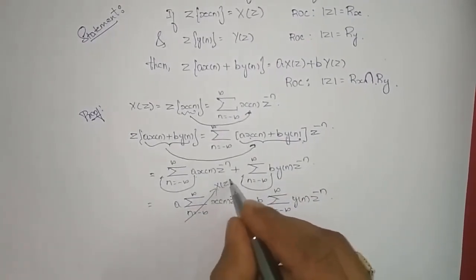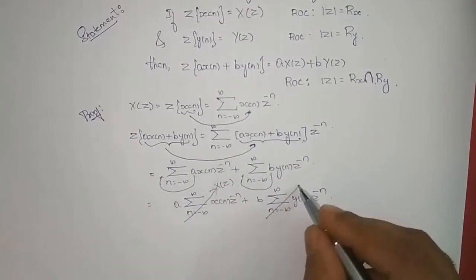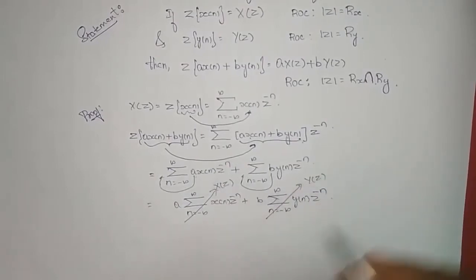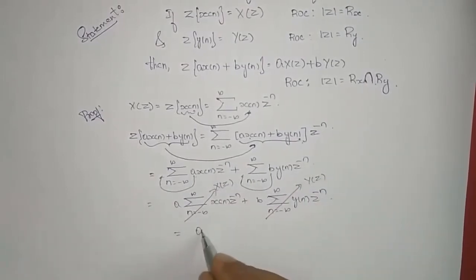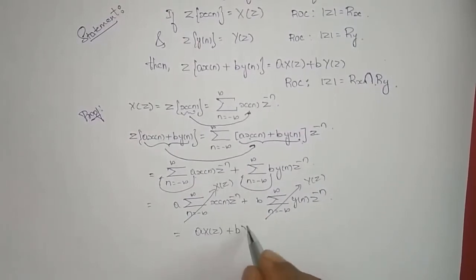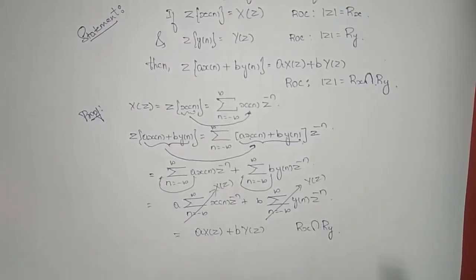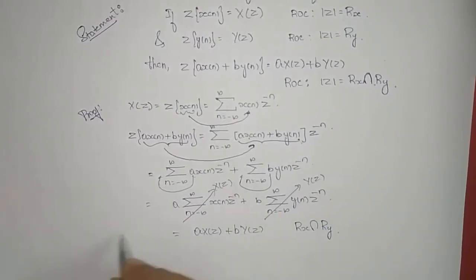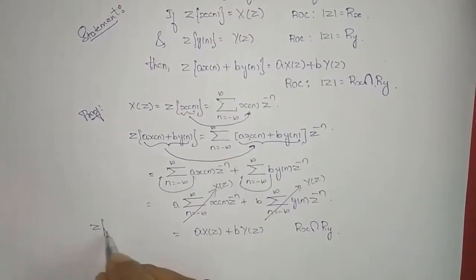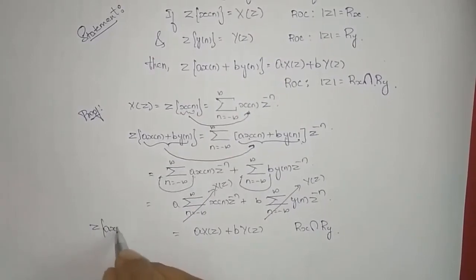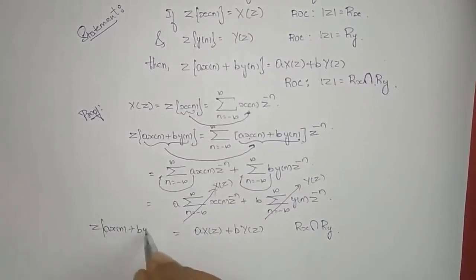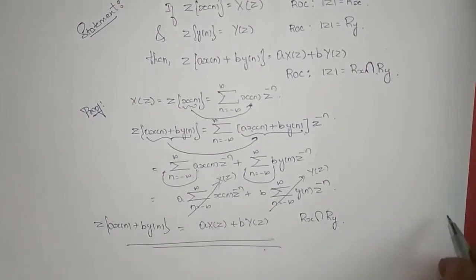What we get is a times the summation of x(n) z to the power of minus n plus b times the summation of y(n) z to the power of minus n, which from the definition of the Z-transform is actually X(z) and Y(z) respectively. So this equals a times X(z) plus b times Y(z) with ROC rx intersection ry, and the ROC does not change. Hence the proof.